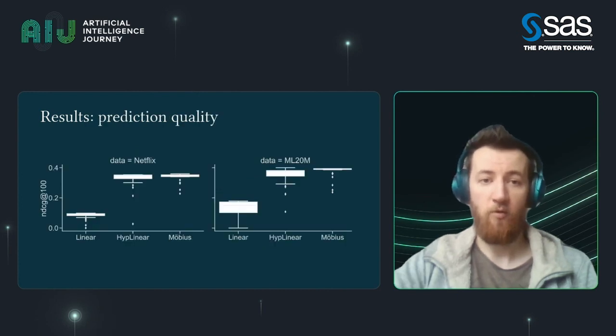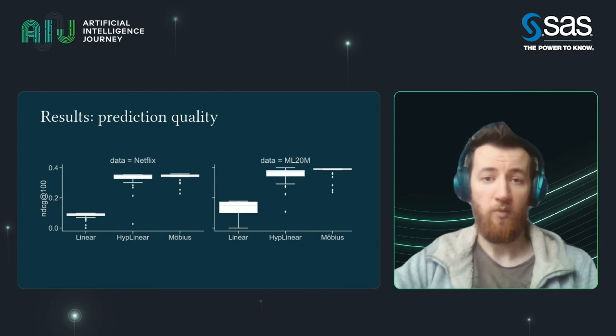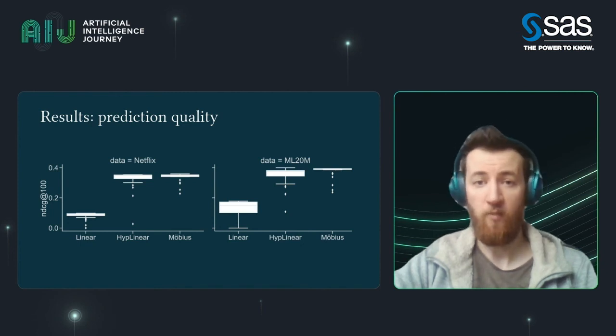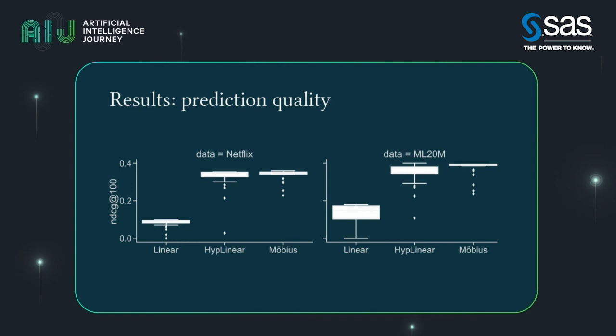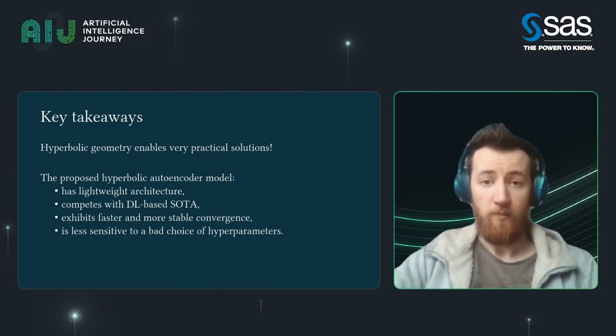Convergence is fine, but what quality do we get? This is also quite interesting. You can see here the comparison between a standard linear autoencoder in Euclidean space and two hyperbolic variations that we employ. The difference between the Euclidean and hyperbolic autoencoders is tremendous. Despite all the tricks trying to set up the linear Euclidean autoencoder, it was impossible — it requires additional tricks. Our hyperbolic model achieves adequate quality without introducing additional sophistication to the architecture.